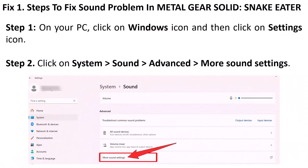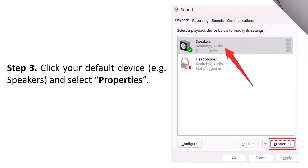On your PC, click on the Windows icon and then click on the Settings icon, then click on System, then Sound, then Advanced, then More Sound Settings. Then click on your default device, for example Speakers.